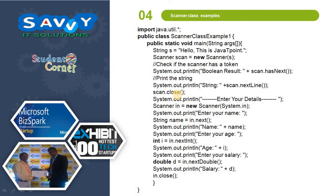Similarly, now I am taking a bit more detailed example. Here we are importing the Scanner class and creating an object. First we need to read a boolean result using hasNext. Then we read a string using next, and read a line using nextLine. We also create another object, close it, and then read name as a string, age as an integer, and salary as a double. So we are reading three different objects — three different types of data input. Thank you.